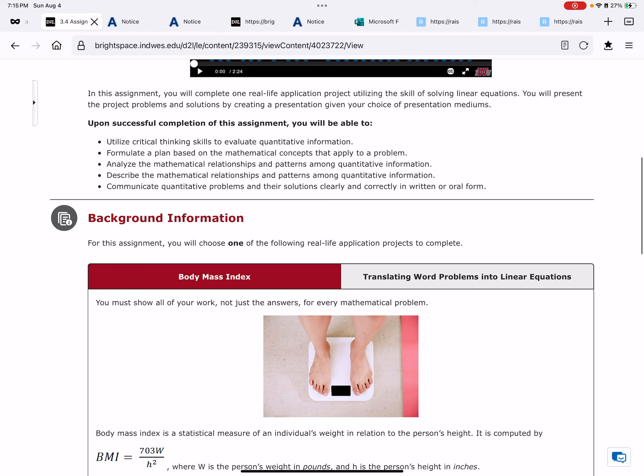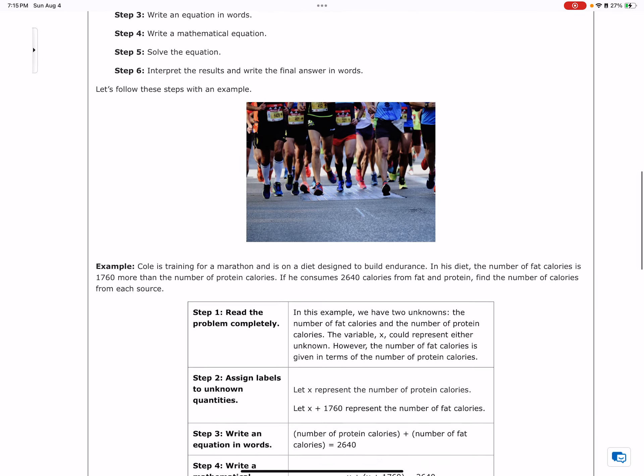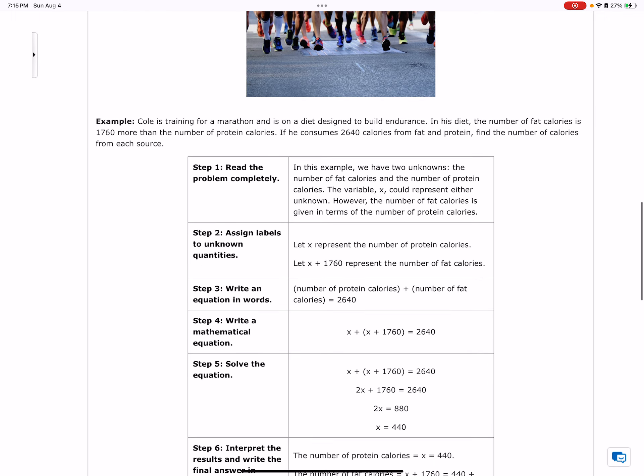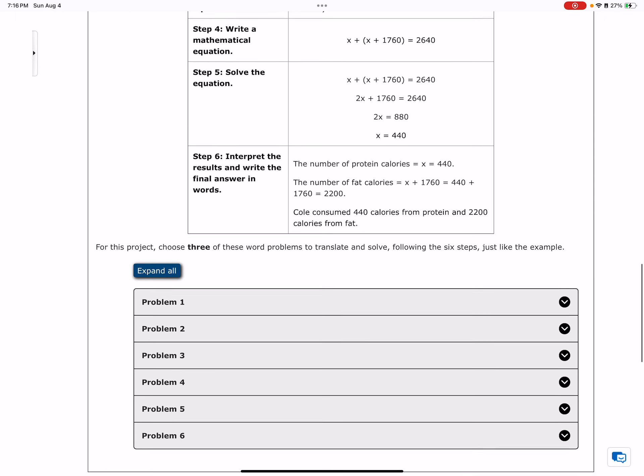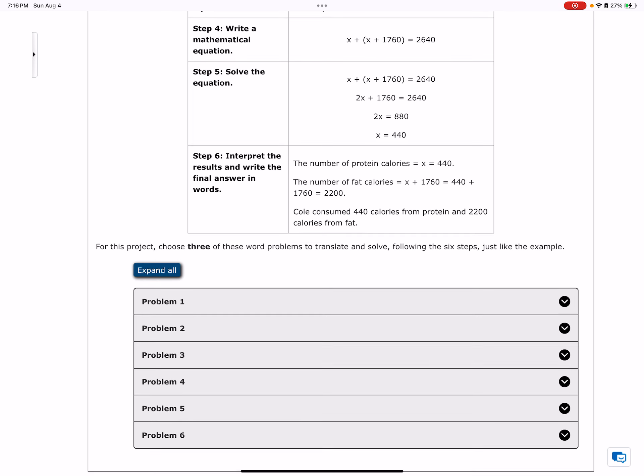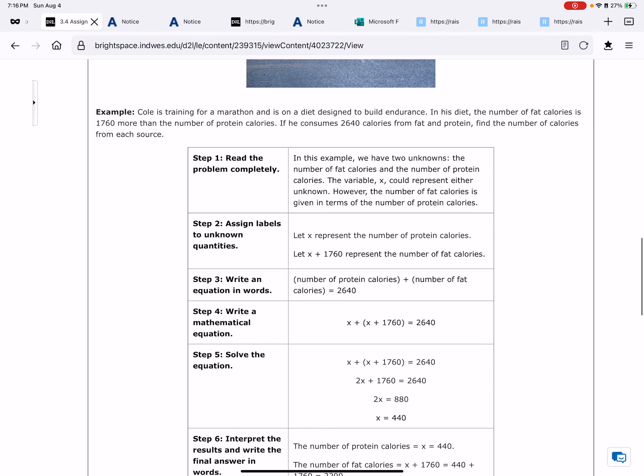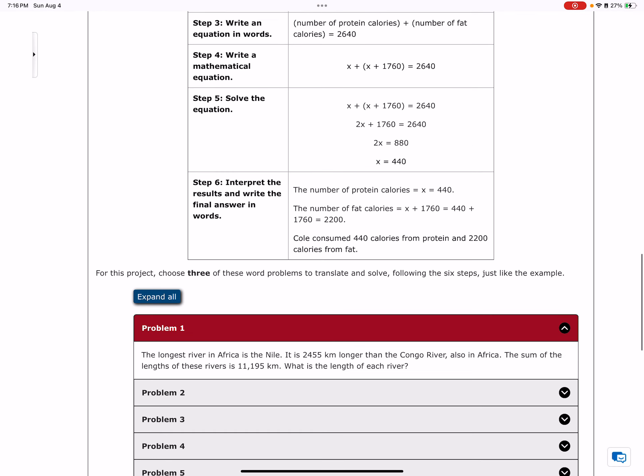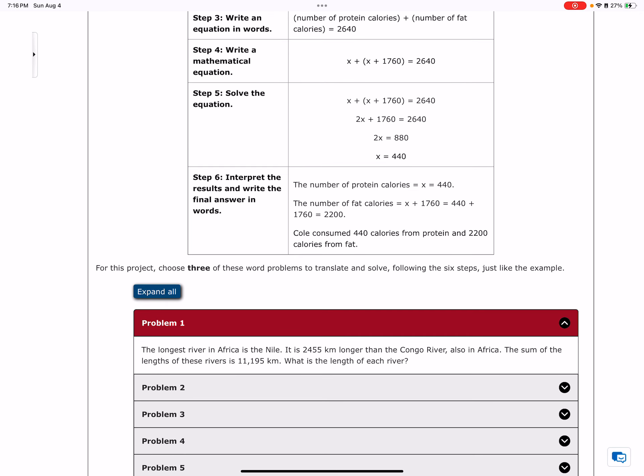Or you could do translate word problems into linear equations. It tells you there's six steps and which one you're supposed to do. You would need to choose three of these to translate and solve - any three of them - and you're going to do these six things. You could do three slides for this one and show the six steps on each slide.